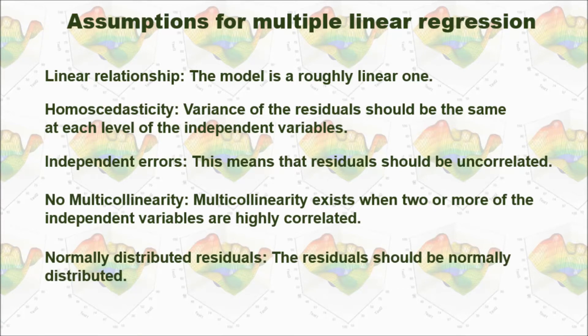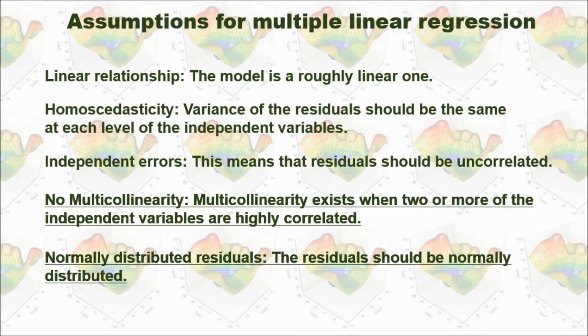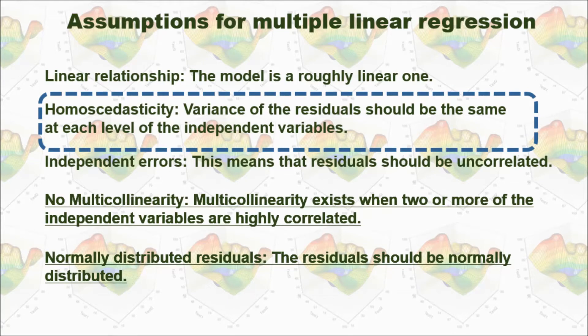The last assumption is the residuals should be normally distributed. I discussed multicollinearity and normally distributed residuals in my previous videos. You are welcome to watch those videos. In this video, I'm going to talk about homoscedasticity.